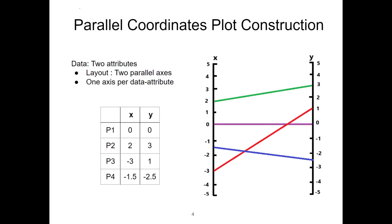For example, to draw the edge on the parallel coordinates that represents point 2, we move two units up from the origin on the x-axis and we move three units up from the origin on the y-axis. Then, we connect the point on the x-axis to another point on the y-axis with an edge.